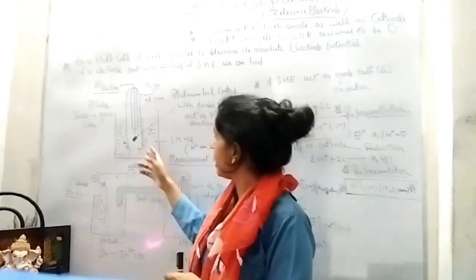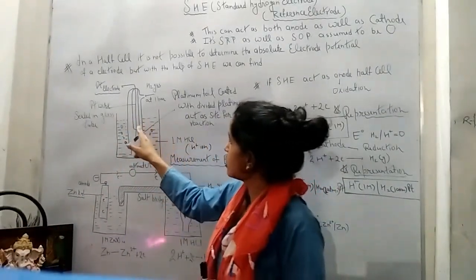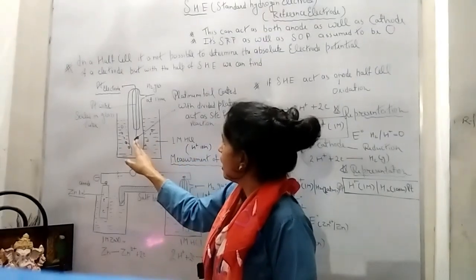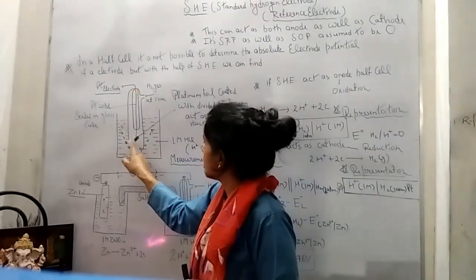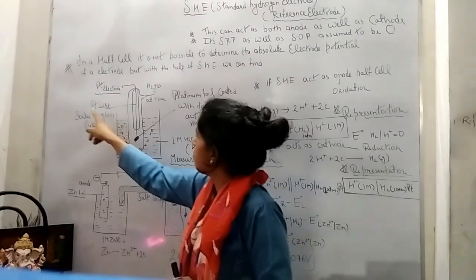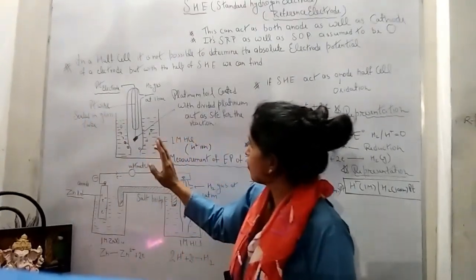Here is the structure of SHE. We have taken the container in which platinum electrode, means platinum wire is attached with the platinum foil. And platinum wire is sealed in glass tube.